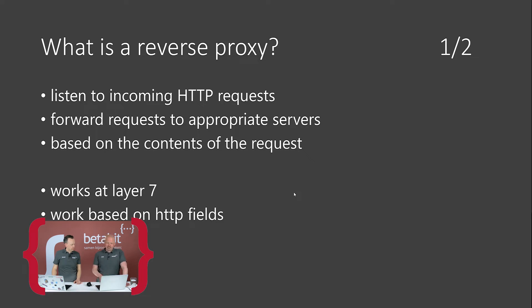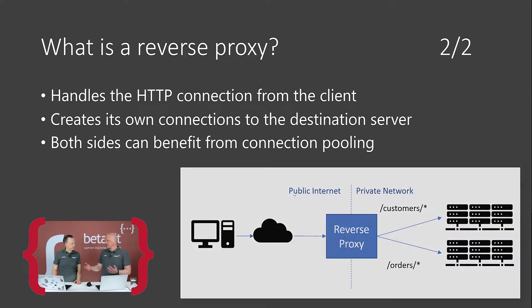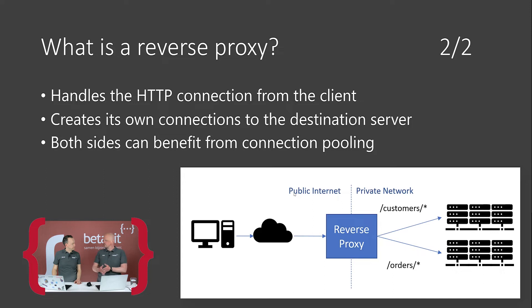So why YARP — why yet another one? Well, this one is different from a normal router because it works on layer 7, which means it works based on HTTP fields and knows what's happening at that level. A reverse proxy also handles the HTTP connection from the client, then creates its own connections to the destination server, and on both ends it can work with connection pooling — making it the spider in the web controlling whatever happens around HTTP.